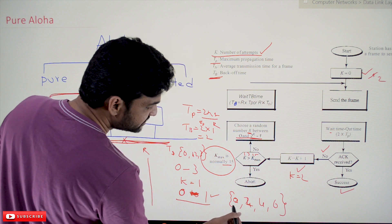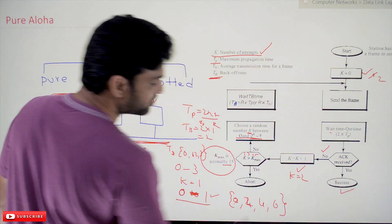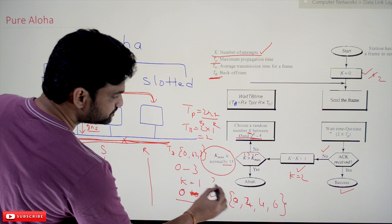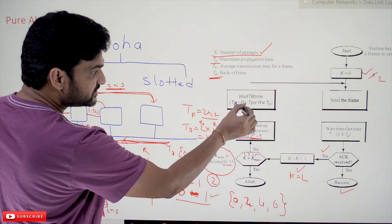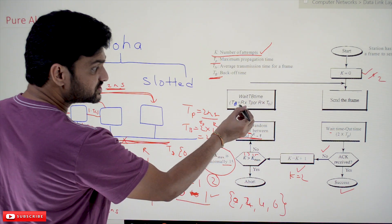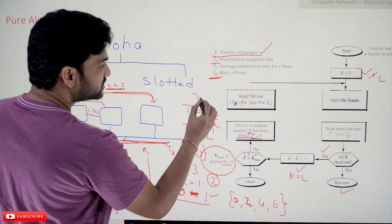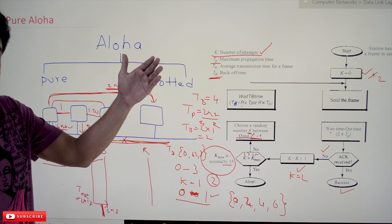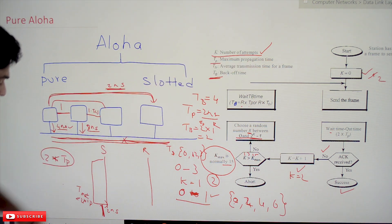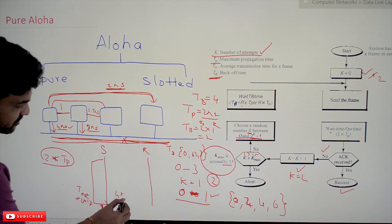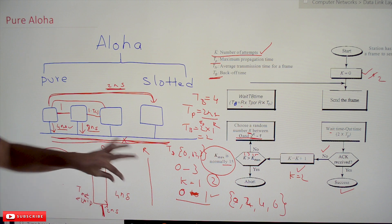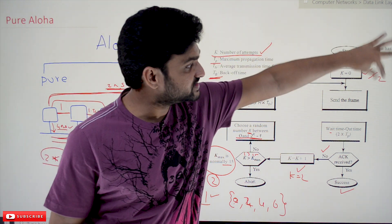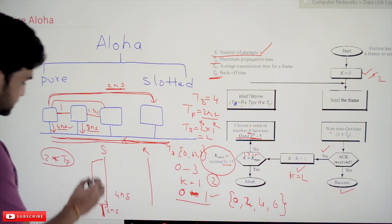For example, if the random value chosen is 2, then tb = 2 × tp = 2 × 2 = 4 nanoseconds. In the first retransmission attempt with k equals 2, the system is going to wait for 4 nanoseconds. After 4 nanoseconds, it starts its retransmission again. The value of k is still 2. Send the frame, wait for the timeout time 2 × tp, and check for acknowledgement.